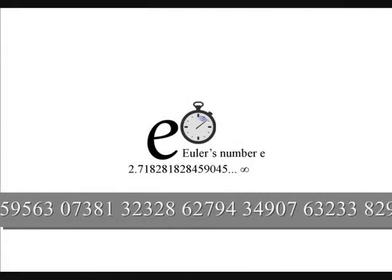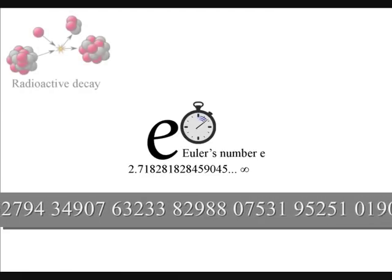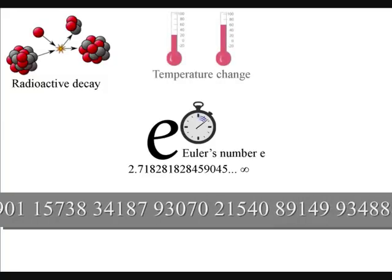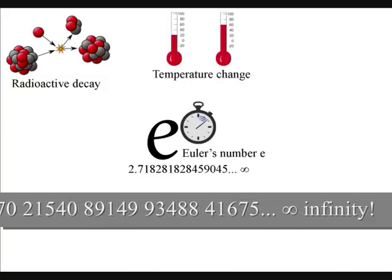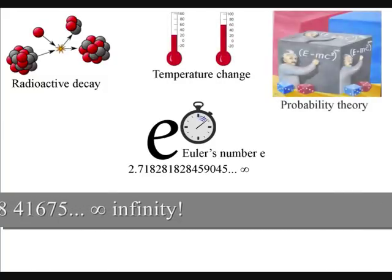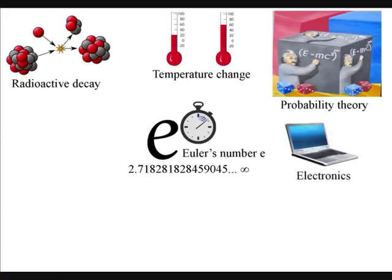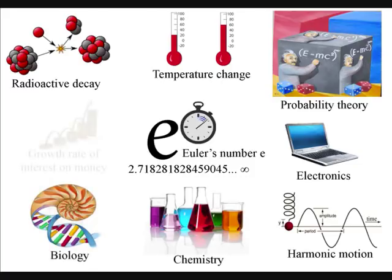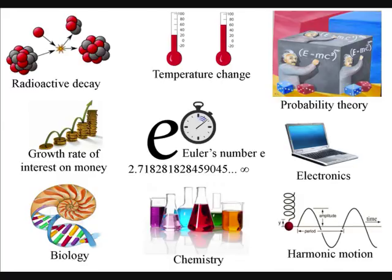Euler's number E can be found everywhere in such diverse things as radioactive decay, temperature change, probability theory, electronics, harmonic motion, chemistry, biology, and how the growth rate of interest on money is relative to the length of each time period it is calculated to.